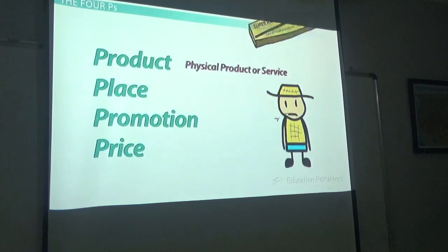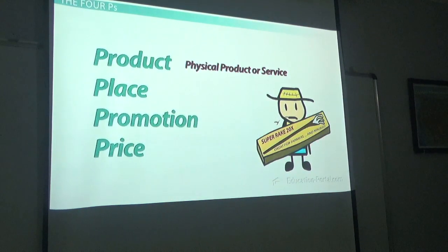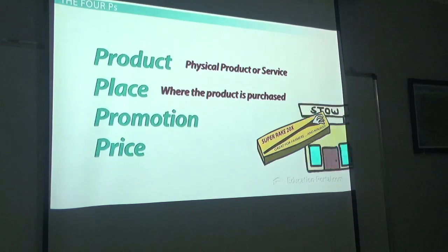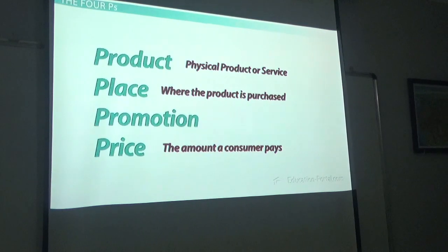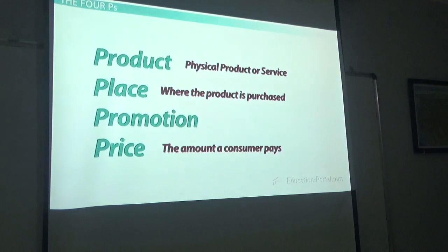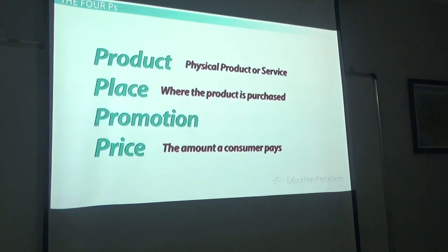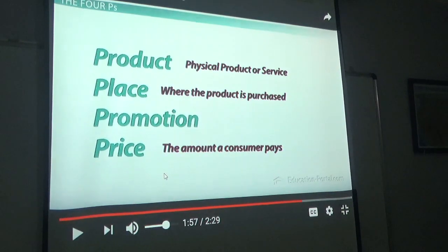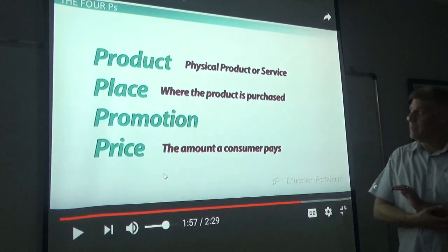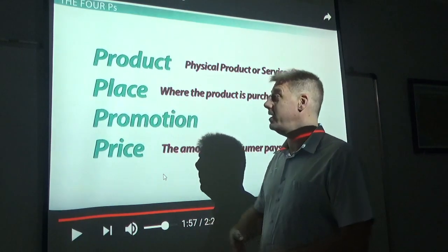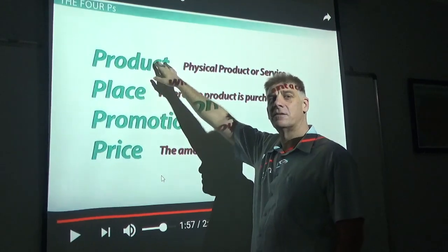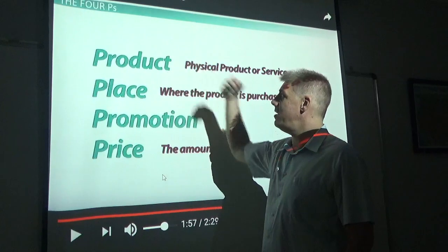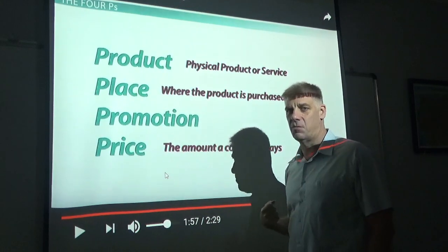A product can be either a physical product or a service. Place is where the product is purchased. Price is the amount the consumer pays. Promotion consists of the communication tools used to get the company's message out. The marketing process starts with the analysis of the need that the customer has — trying to understand how we can get something the customer wants to them.